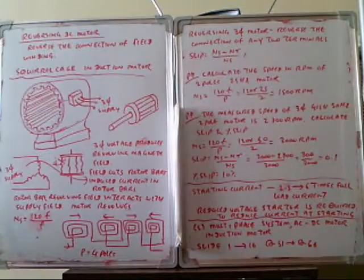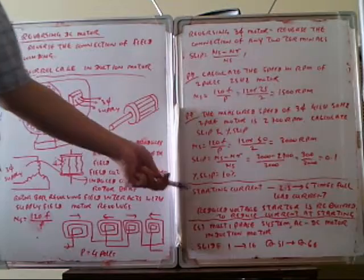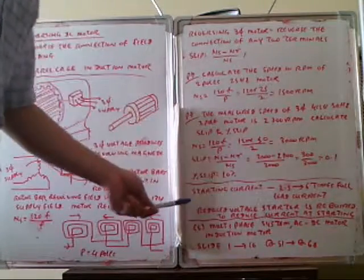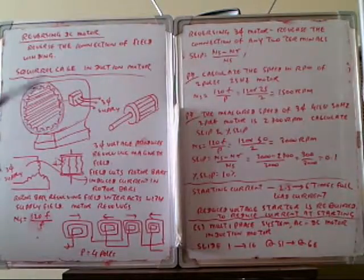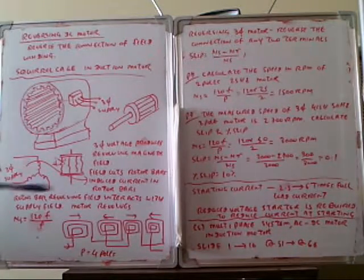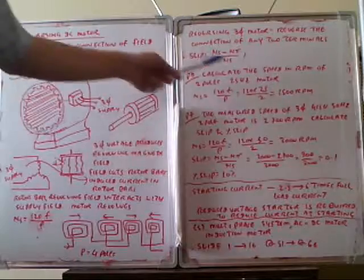Therefore we have to utilize the voltage reduction method to reduce the voltage and current at the starting time. These are the characteristics of the three-phase squirrel cage motor.